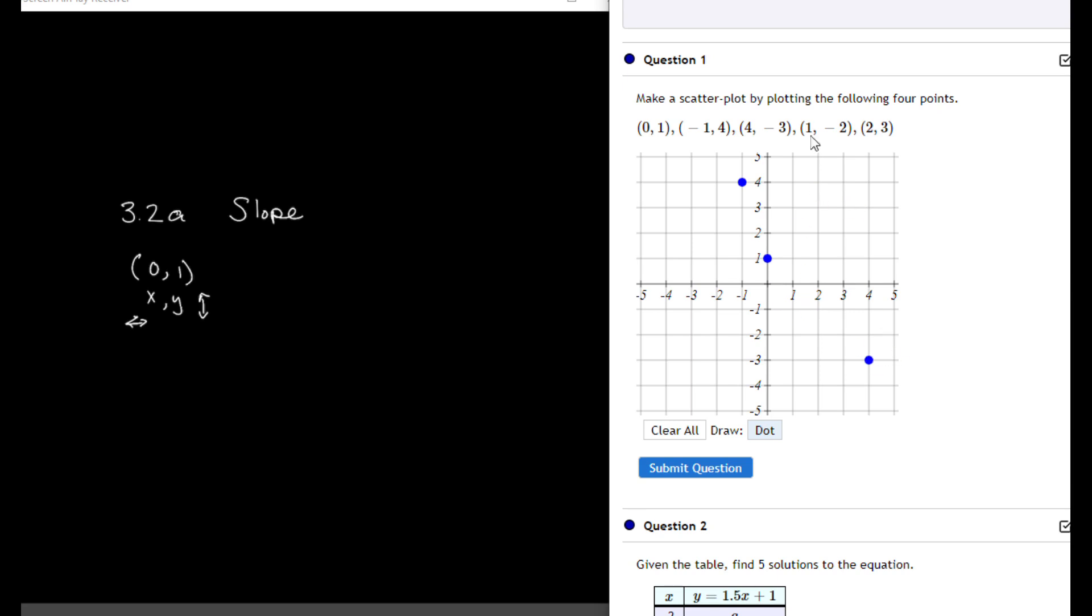The next value we have is 1, negative 2, so that's positive 1 to the right, down 2. And the last one is 2 for x and then y to go up 3.